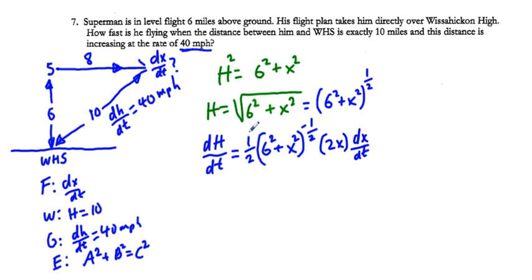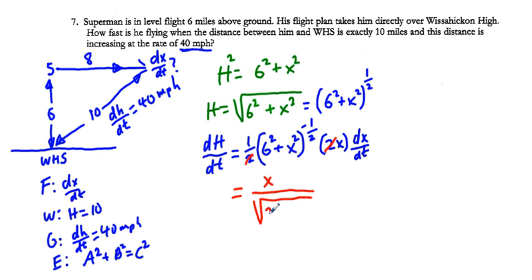Simplifying, the 2 over 2 cancels, giving dH/dt = x / √(36 + x²) · dx/dt.